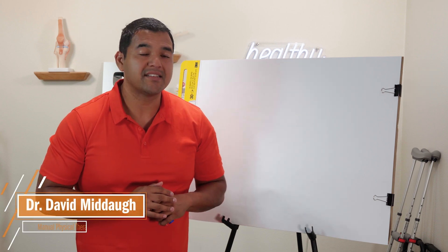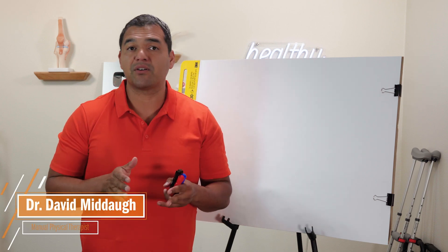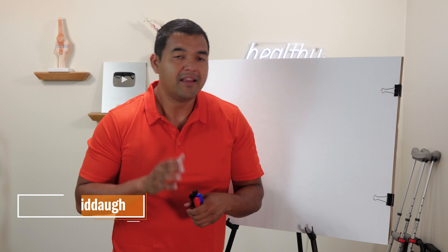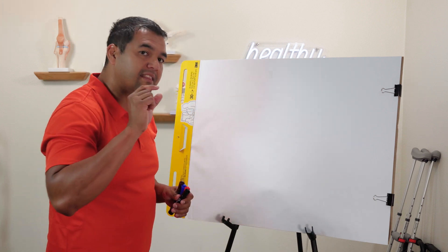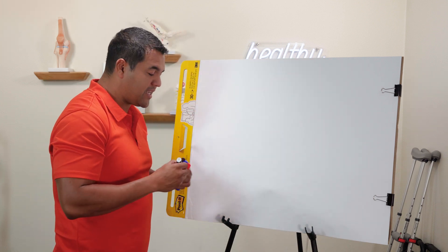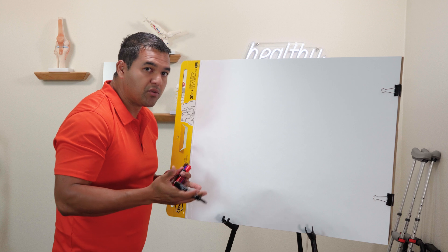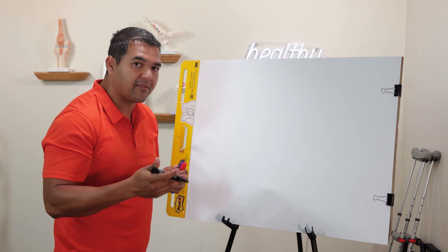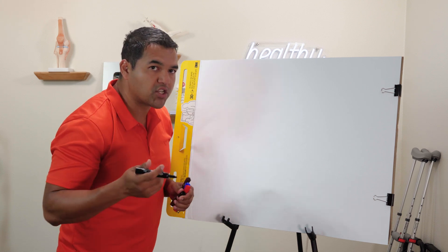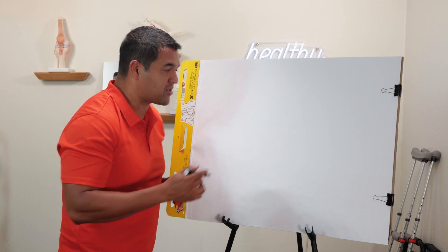Here's the ACL tear grading system explained so that you can better understand your MRI. The MRI is looking at the ACL inside your knee and the degree to which it's torn so that they can determine the severity of the tear and figure out what treatment you need, especially if you need surgery.